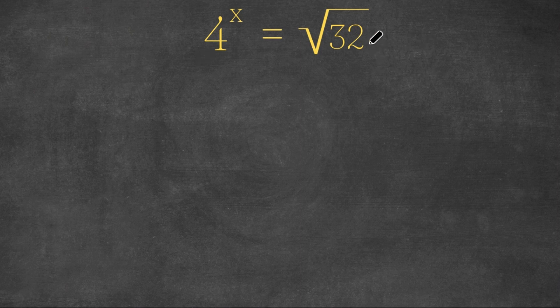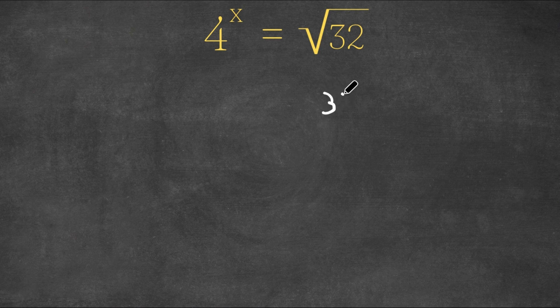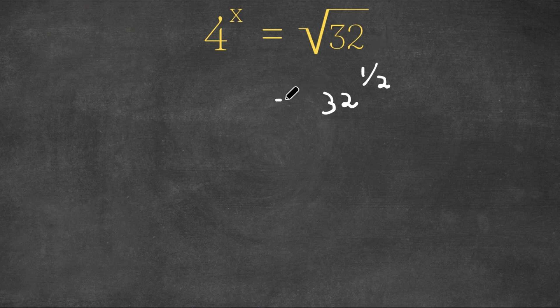Now, the square root of 32 is the same thing as 32 to the power of 1 half. The square root is the number to the power of 1 half. So this is still equal to 4 to the power of x.